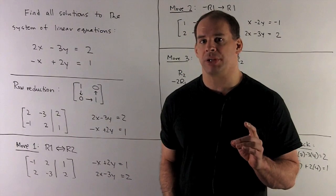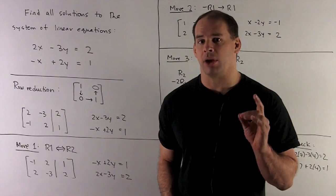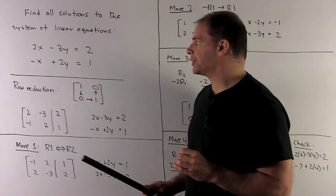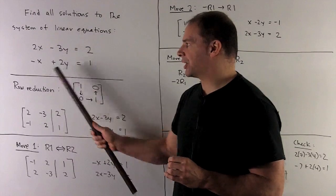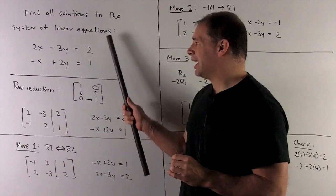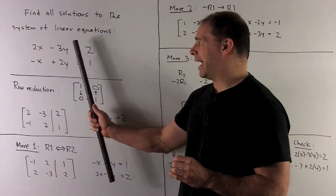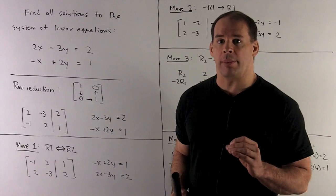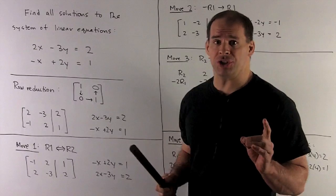Our method is going to be row reduction, which means I need to set up an augmented matrix. Take a look at our system of linear equations. We have x's in a column, y's in a column, constant terms in a column, and on the other side of the equal signs.